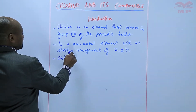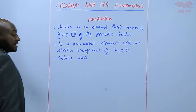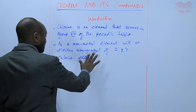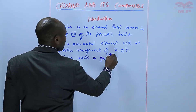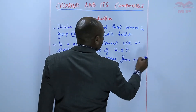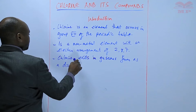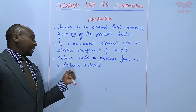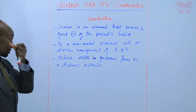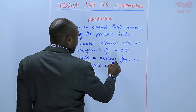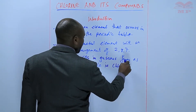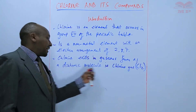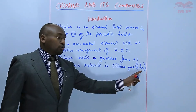Chlorine exists as a gas and this gas exists as a diatomic molecule. So chlorine exists in gaseous form as a diatomic molecule — that is, a molecule that is made of two atoms. That's why we write the formula for chlorine gas as Cl₂, showing that it exists as a diatomic molecule made up of two atoms.